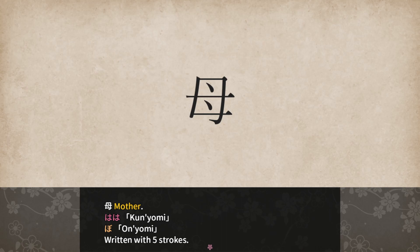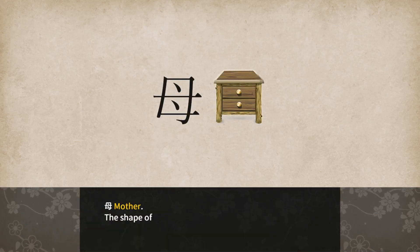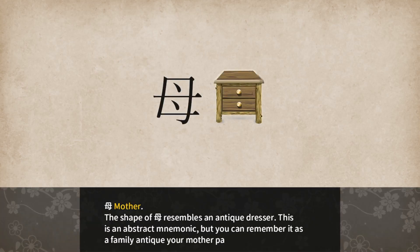Mother: Haha for Kunyomi and Bo for Onyomi. Written with 5 strokes. The shape of Haha resembles an antique dresser. This is an abstract mnemonic, but you can remember it as a family antique your mother passes on to you.